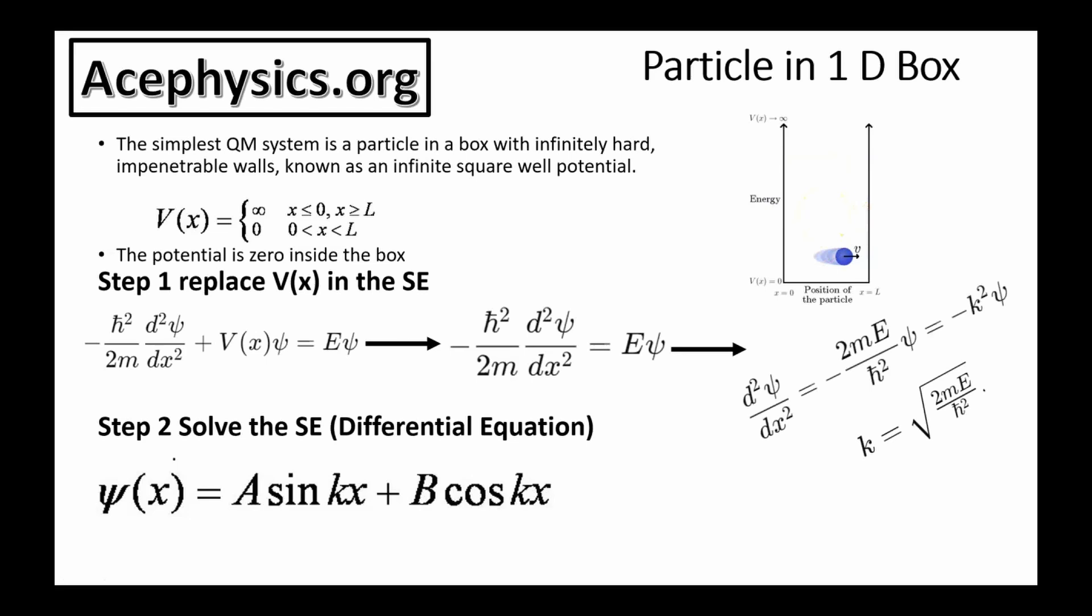At the edge of the box, the potential energy is infinite, which means the particle can't escape the box. If the particle were to leave the box, it would require infinite potential energy, which is not possible. This is the system, it's a small particle like an electron or a proton. This is the potential energy function. The potential energy is zero in the box, and the potential energy is infinity at zero and L, which are the boundaries of the box.